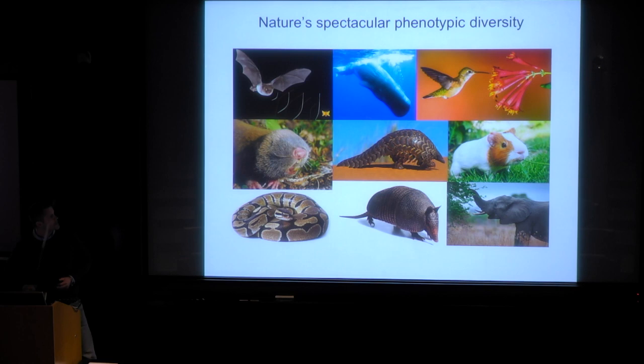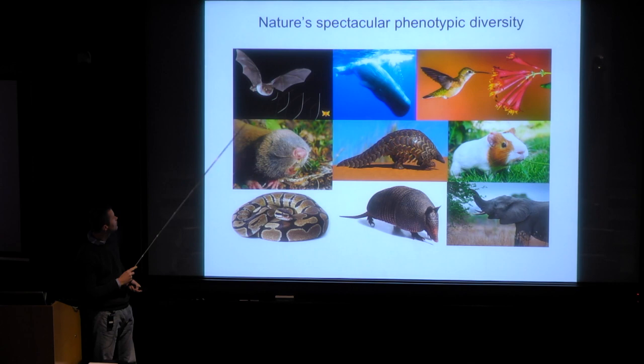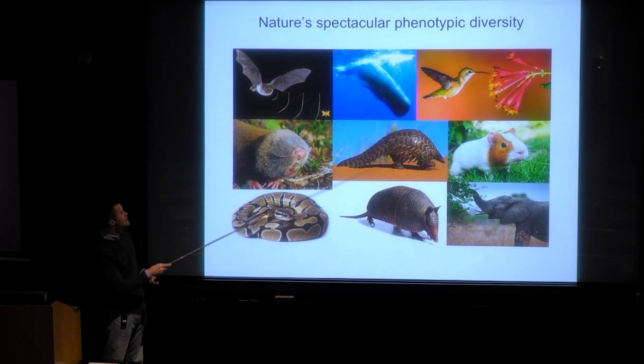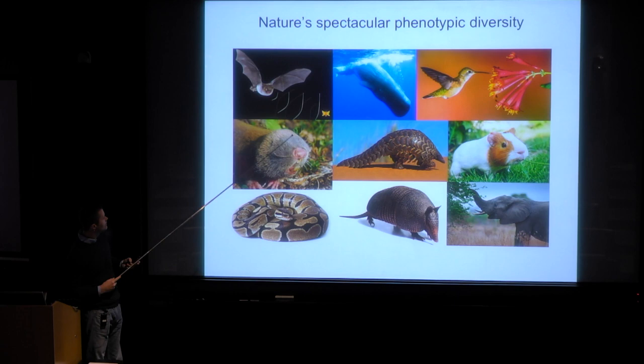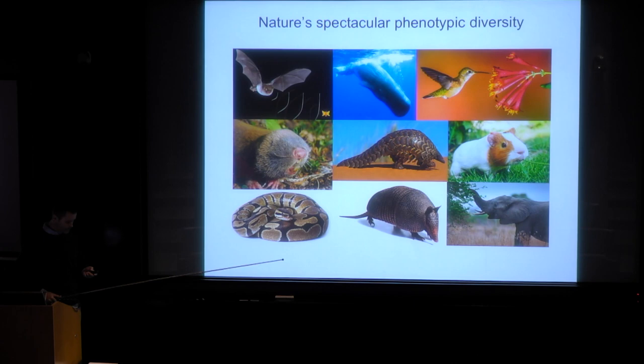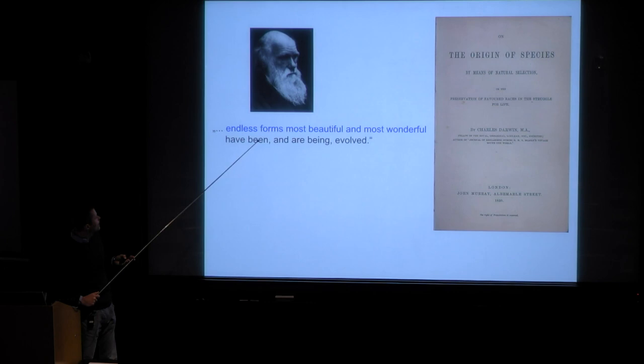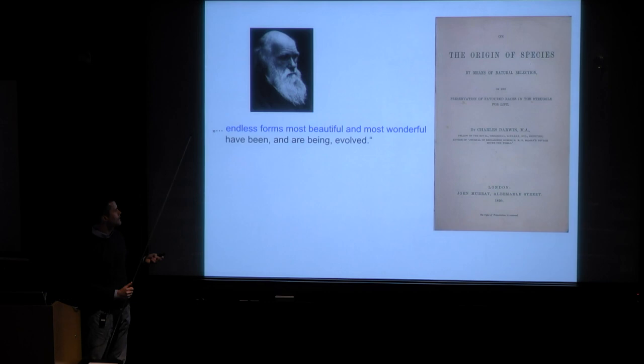To me, one of the most fascinating aspects of biology is this fantastic phenotypic diversity that has evolved. For example, bats are able to navigate and hunt in complete darkness. The sperm whale can dive for more than one hour. These animals can hover in the same spot for an extended period of time. We have mammals with body armor, mammals that lost functional eyes, and other species that lost limbs. I think this diversity is what Charles Darwin meant when he wrote about endless forms most beautiful and most wonderful at the very end of the Origin of Species.